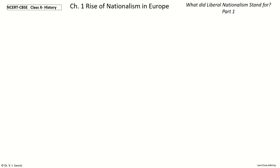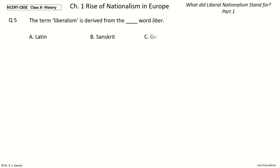Question 5. The term liberalism is derived from the dash word liber. The options are: Latin, Sanskrit, German, French. And the answer is Latin. So, the term liberalism is derived from the Latin word liber.